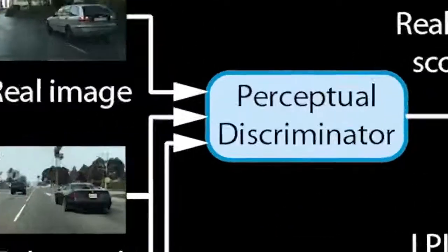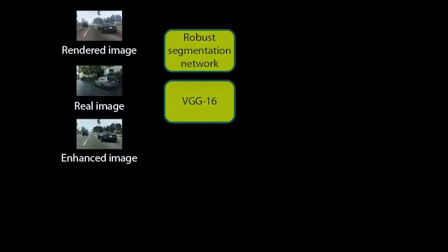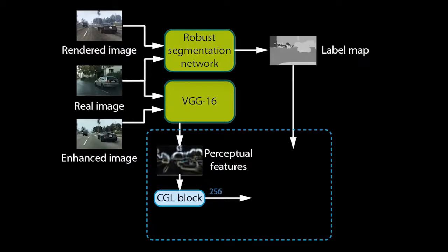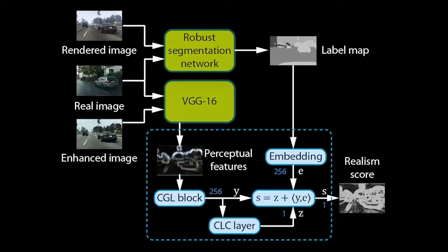Let us now look at how the perceptual discriminator works. The discriminator contains a robust semantic segmentation network and a network for extracting perceptual features — in this case, a VGG-16. We extract features from the VGG at multiple levels and pass them through a convolutional network. This differs from prior work that trains discriminators directly on images. Training on VGG features allows our network to quickly learn a model of realism at multiple perceptual levels. We further pass the unmodified rendered image, as well as real images, through the segmentation network to obtain a label map for each. The label map is used to specialize the discriminator on individual object classes. Since we use a pre-trained, robust segmentation network, the object classes are consistent for rendered and real images.